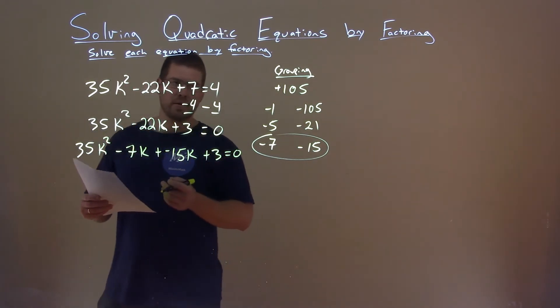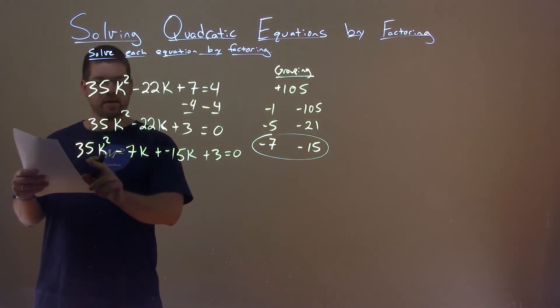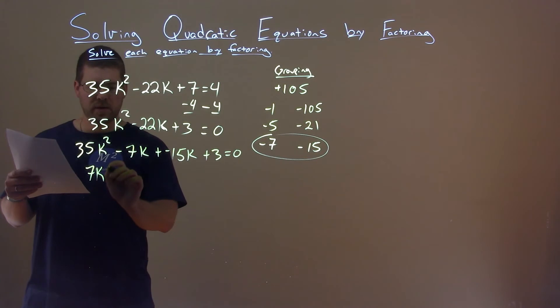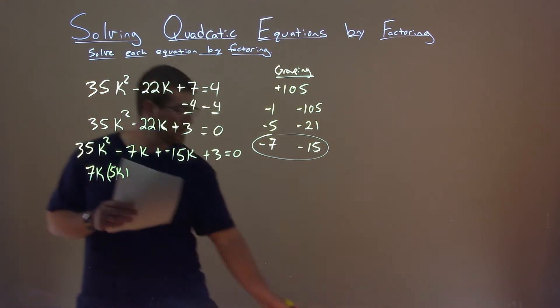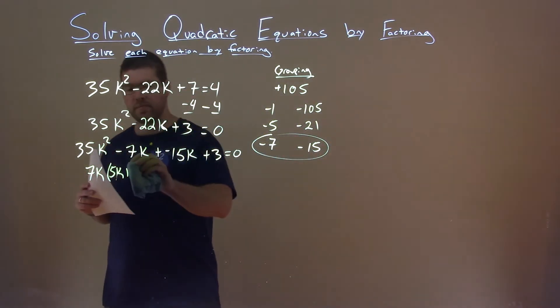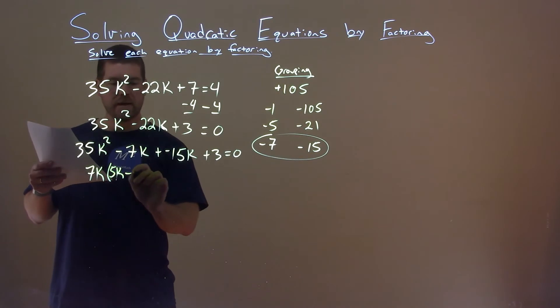And now we're starting our journey by factoring by grouping. Let's pull out a common factor here. 7k goes into both parts here, and we're left with 5k minus 1.